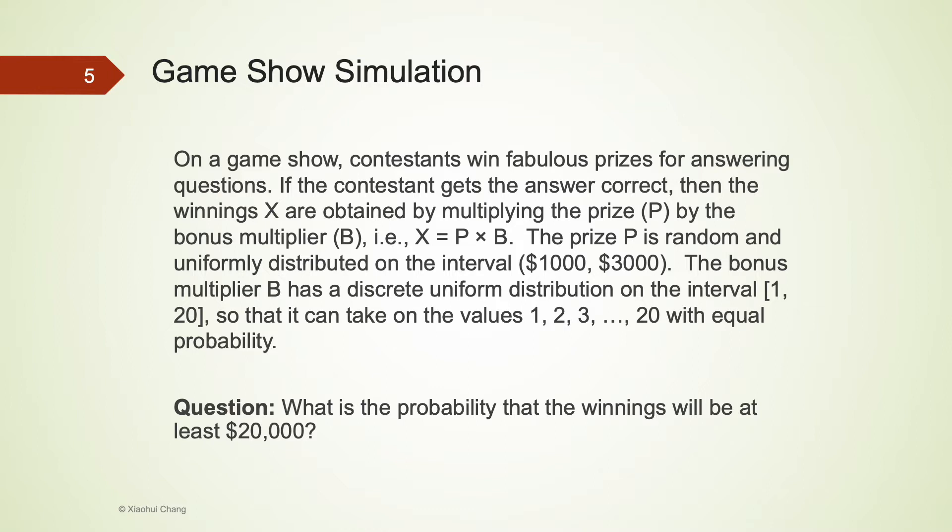The winning X is equal to P multiplied by B. The prize P is random and uniformly distributed on the interval between $1,000 and $3,000. That means it is equally likely for the prize P to be $2,000 or $2,500 or $2,537. The bonus multiplier B has a discrete uniform distribution on the interval 1, 2, 3, all the way to 20, so that it can take on the values 1, 2, 3, 4, 5, all the way to 20 with equal probability.